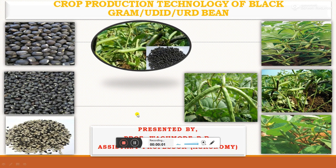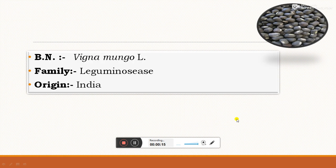Hi, hello friends, I am Professor Vaghamadab here. Today we will discuss the topic on crop production technology of black gram. Black gram is also called as urad or the urad bean. The botanical name is Vigna mungo, the family Leguminaceae or Papilionaceae or Fabaceae, and the origin of black gram is from India.